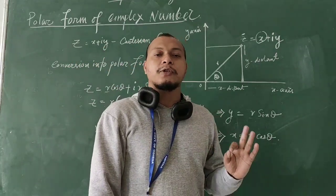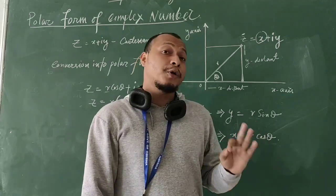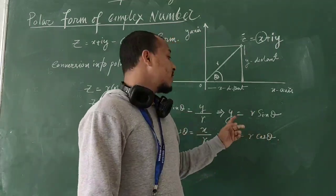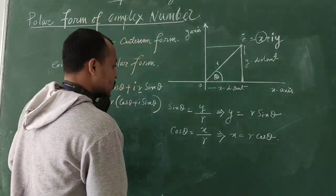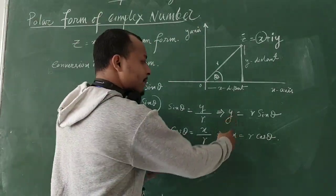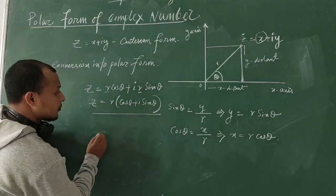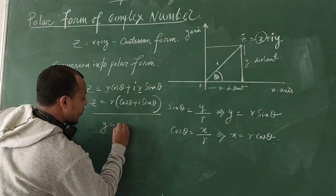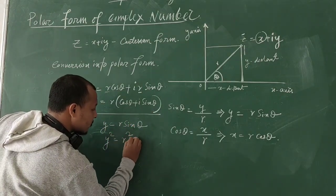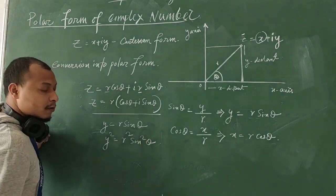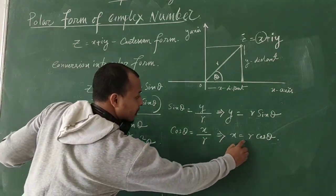We know that sin²θ + cos²θ = 1. We are going to use this identity to find the value of R. Squaring Y = R sinθ gives Y² = R² sin²θ.